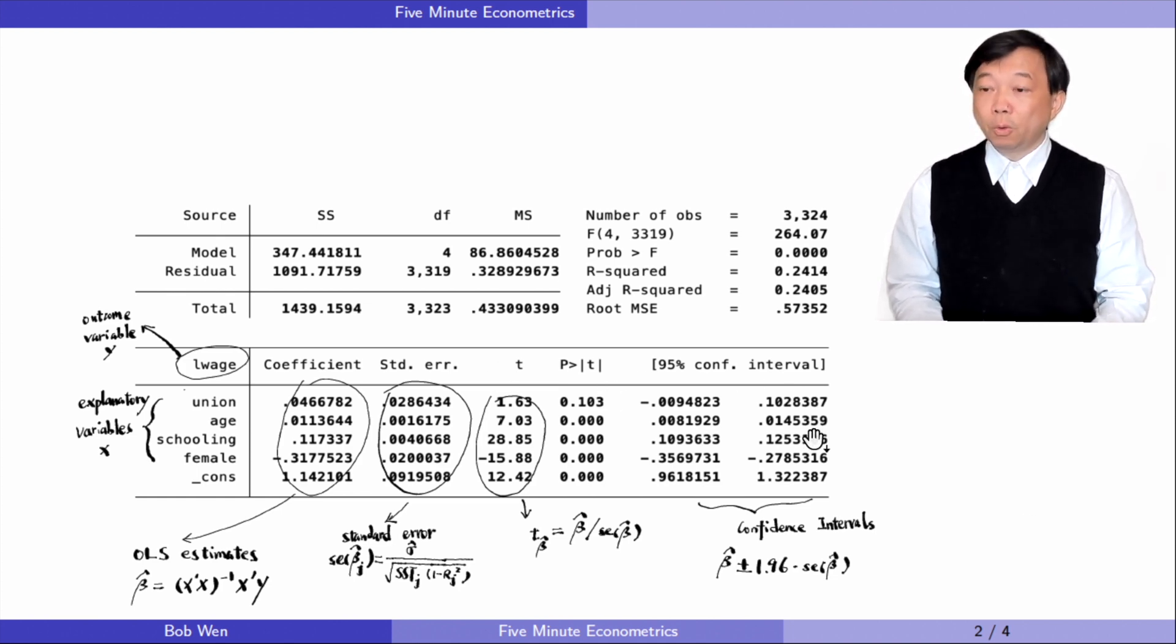Let's look at the lower part of the window first. In the first column, we find the outcome or dependent variable y, which is the log wage in our example. The explanatory variables or the independent variables x are below it. They are union, age, schooling, and female in our case. The constant term or the intercept is in the last line.